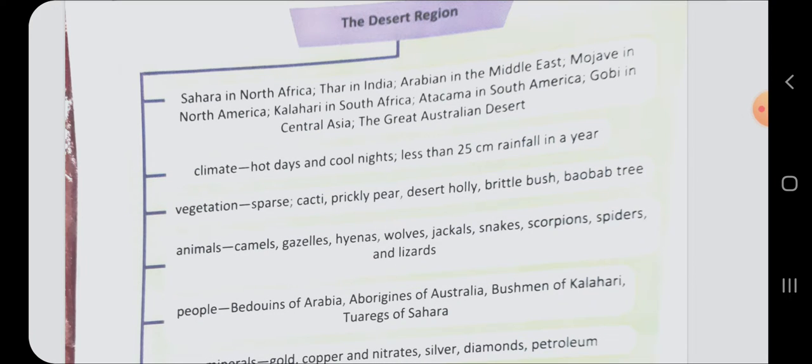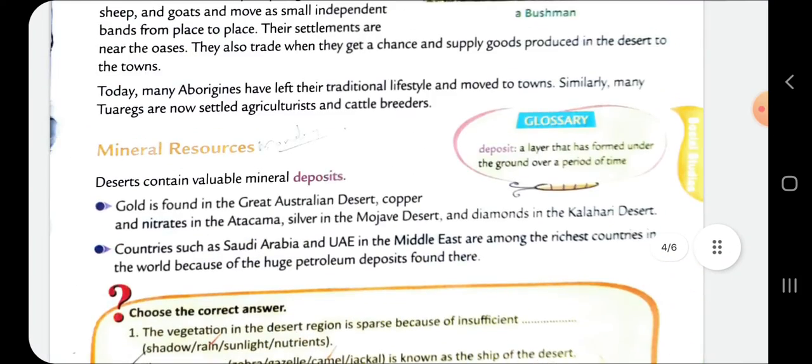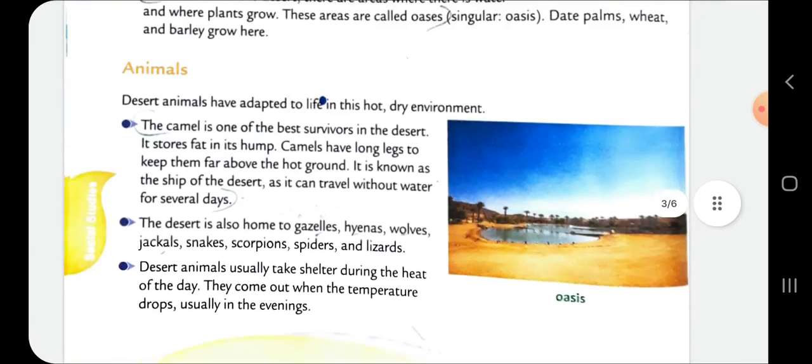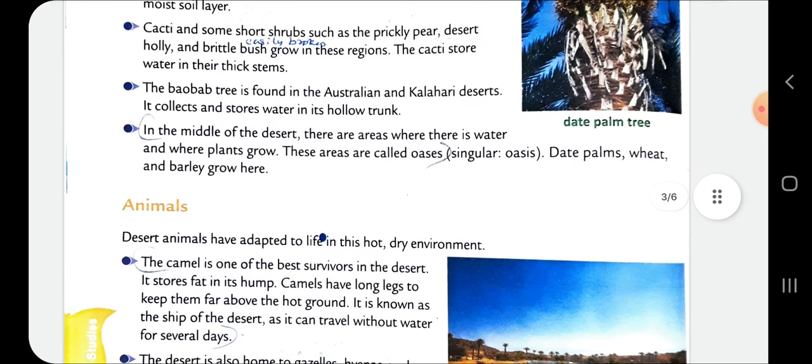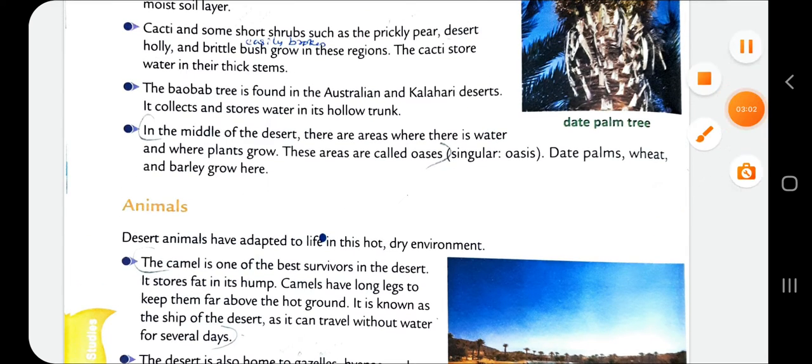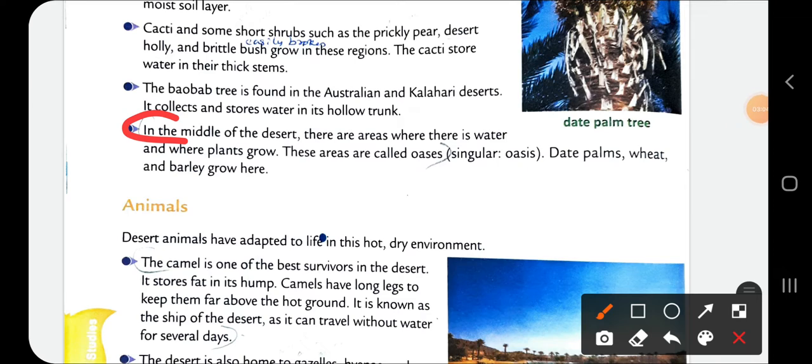Then second question: What is an Oasis? That is given in your textbook page number 238. In the middle of the desert there are areas where there is water and where plants grow. These areas are called Oasis. Date palms, wheat and barley grow here. That is the answer to the second question.